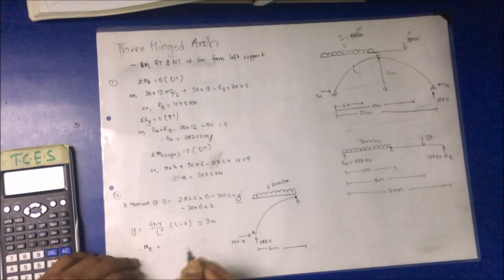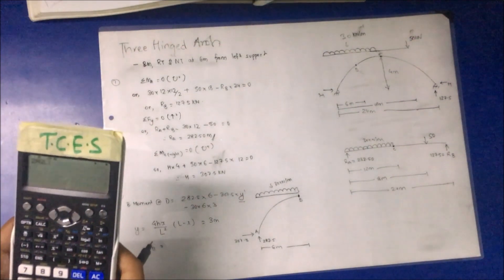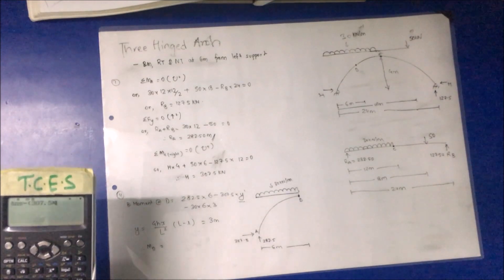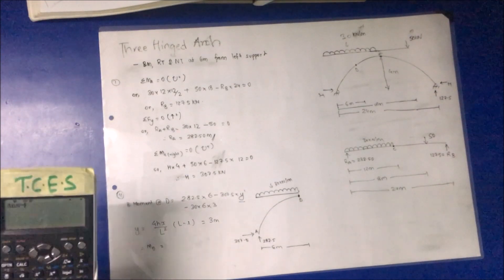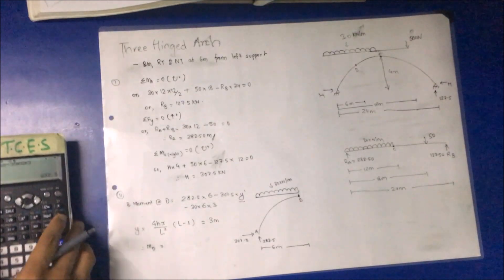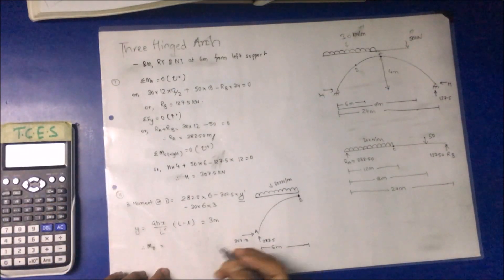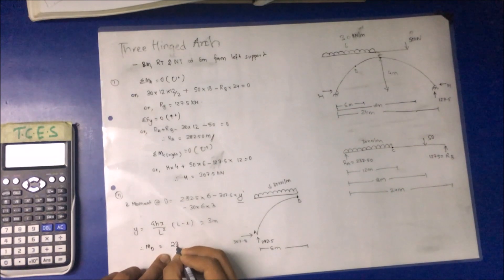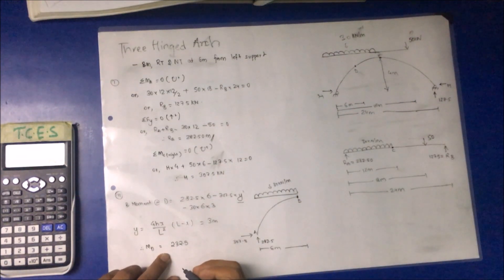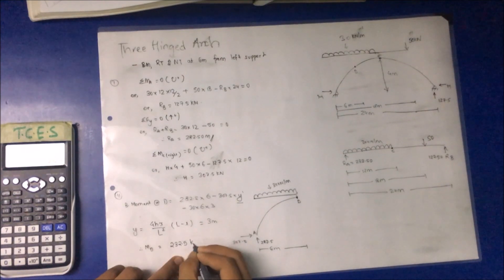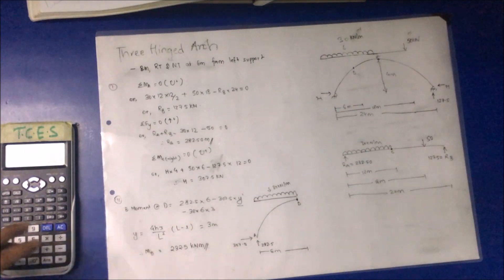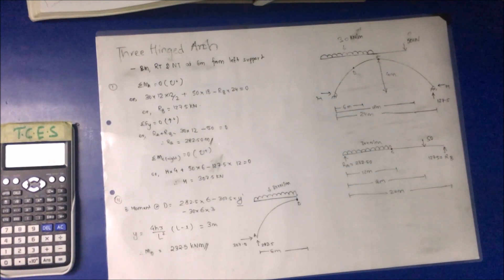Calculating: BD = 282.5 × 6 − 307.5 × 3 − 30 × 6 × 3 = 1695 − 922.5 − 540 = 232.5 kN·m. This is the bending moment at the section 6 meters from the left support.